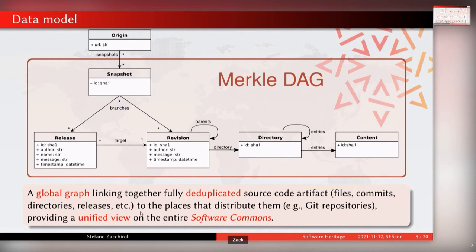In addition to the Merkle structure, we have 'software origins' — URLs pointing to the state of a repository found at that URL at the time of the last visit. This data structure is interesting because deduplication makes the archival work feasible, but it also materializes a unified view of the entire software commons. We can see where software you developed and published on your personal Git repository was later used as a basis for something else in research or enterprise open source software — we can see who has used your software and created new versions of it.